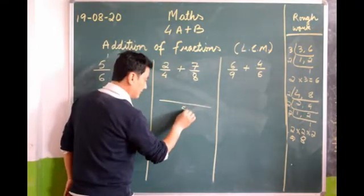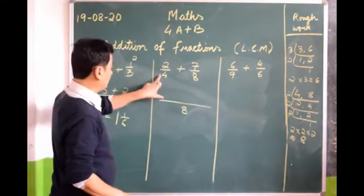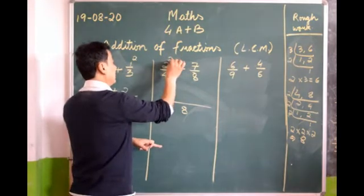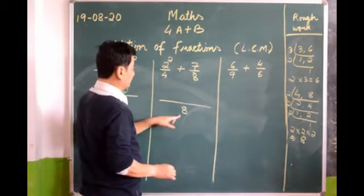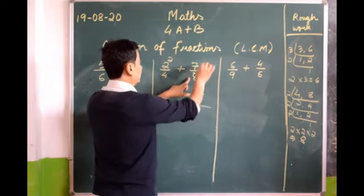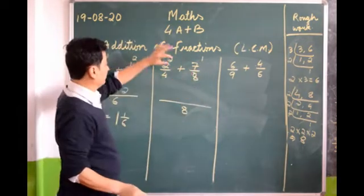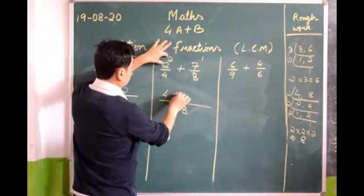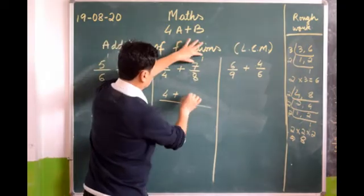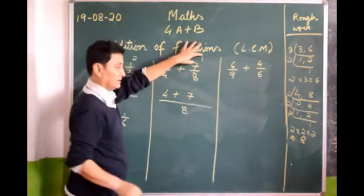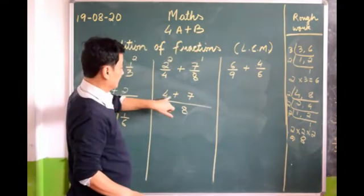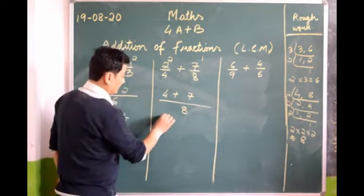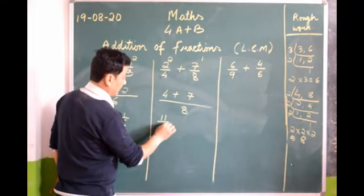4 goes into 8 two times — 4 twos are 8. 8 goes into 8 one time — 8 ones are 8. Now we multiply: 2 times 2 is 4, plus 7 times 1 is 7. Now what should we do? We must add these: 4 plus 7 is 11, so we get 11/8.